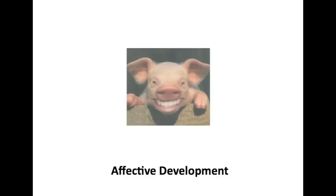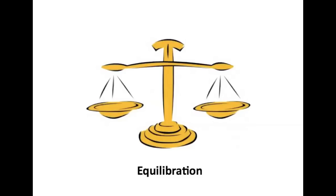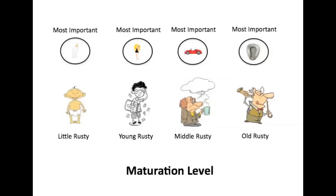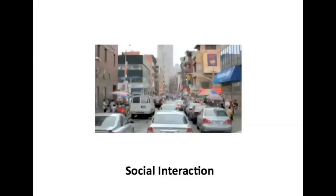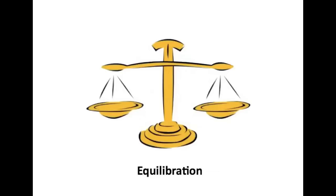The last of these issues is that of equilibration. What Piaget referred to here is the fact that all of these other issues are in balance — their maturity, their experiences, their social interaction, and their affective domain. What he was emphasizing is the fact that life a lot of times is about balance; in other words, one area is not substantially neglected while another area is in absolute abundance. So equilibration is very important in development.